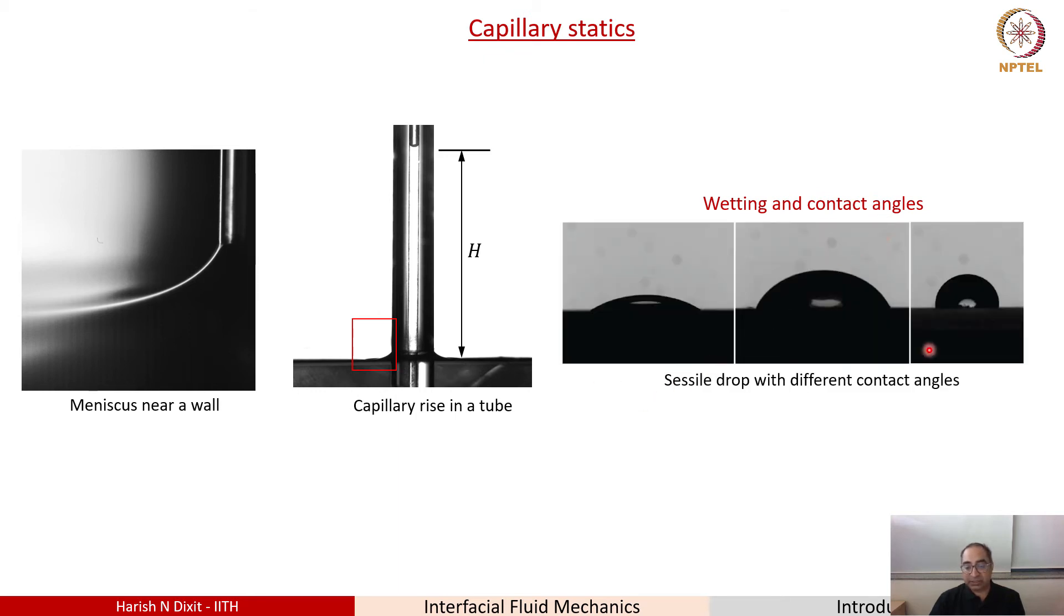So here I'm going to show you three images. These are sessile drops. Sessile drops are drops that are sitting on a surface. And you can notice that these three drops are fundamentally different in one important aspect, which is that the angle that they make with the solid surface is different. If the angle is acute as measured inside the drop, we refer to such surfaces as hydrophilic surfaces. And if the angle is greater than 90 degrees, we refer to them as hydrophobic surfaces.